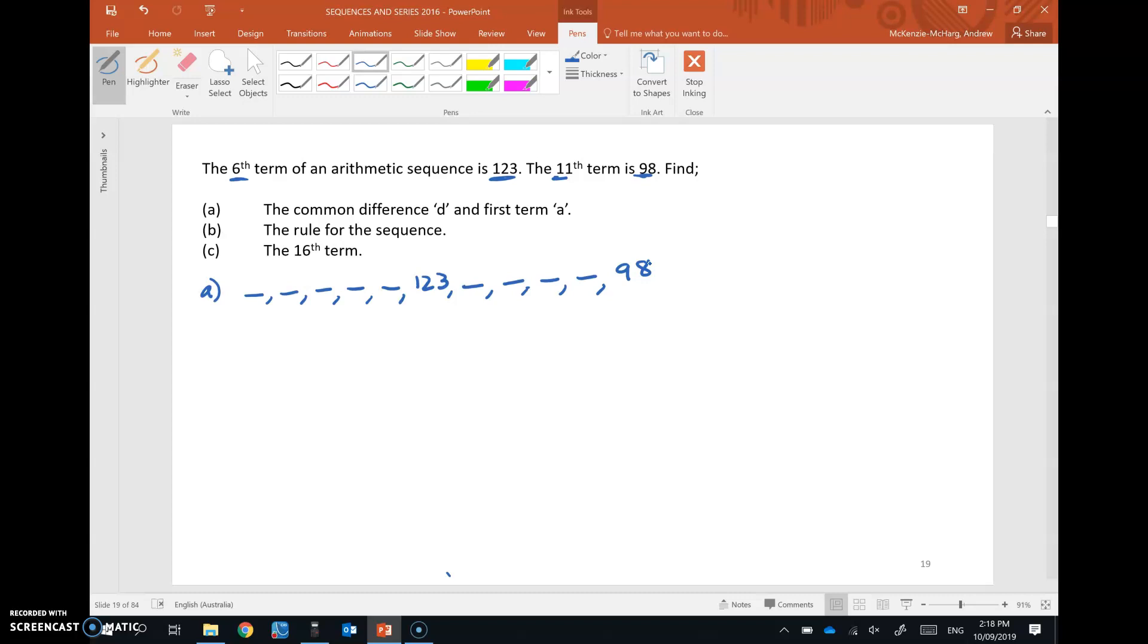So we've got an arithmetic sequence that is decreasing here, clearly. So ask yourself, how many common differences between the 6th term and the 11th term? So let's see, 1, 2, 3, 4, 5. And you might be realizing now, you can actually take these two numbers. 11 take 6 gives 5. Just like in the previous example, we were going from the first term to the 7th term. That was 6 common differences. 7 take 1 is 6. So to go from 123 to 98, we will need to add 5 common differences.